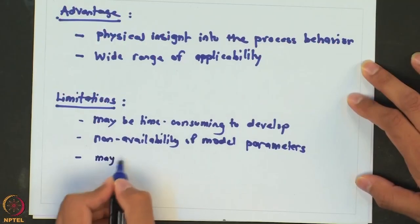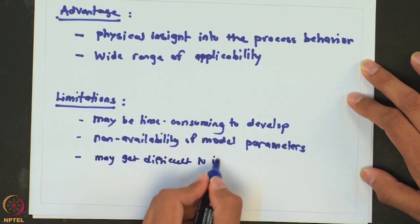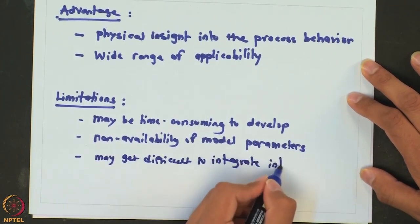From the context of this course, we are interested in using these models for controller design. If the model gets really complicated, it will be very difficult to incorporate into the design of a control system. We typically tend to go for a simplistic model which can capture the response of a process, so complex first principle models may be difficult to integrate into controller design.